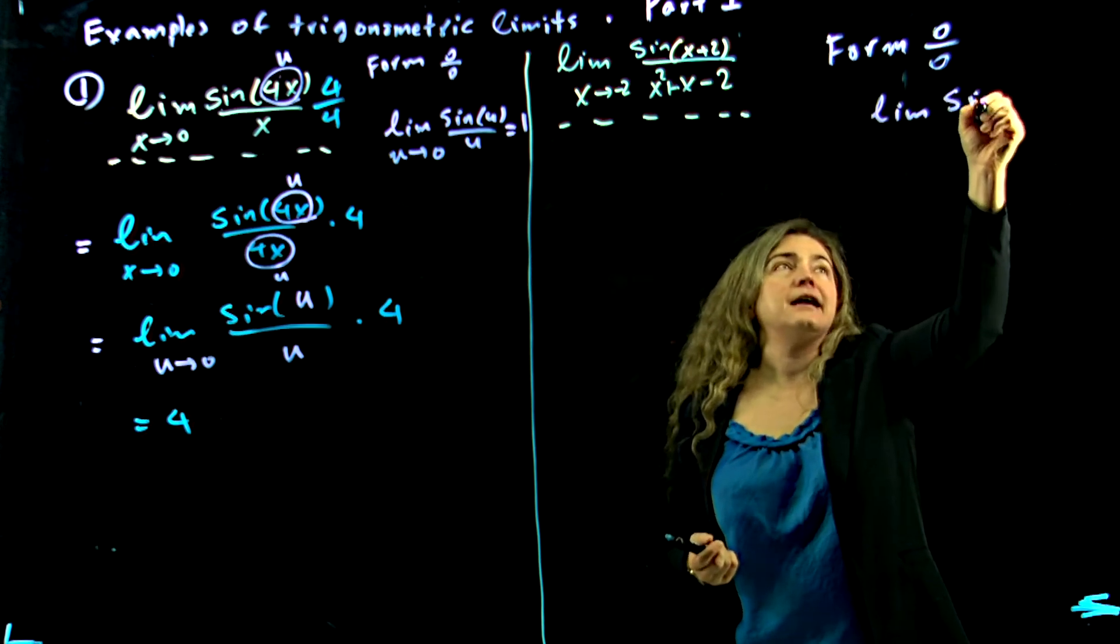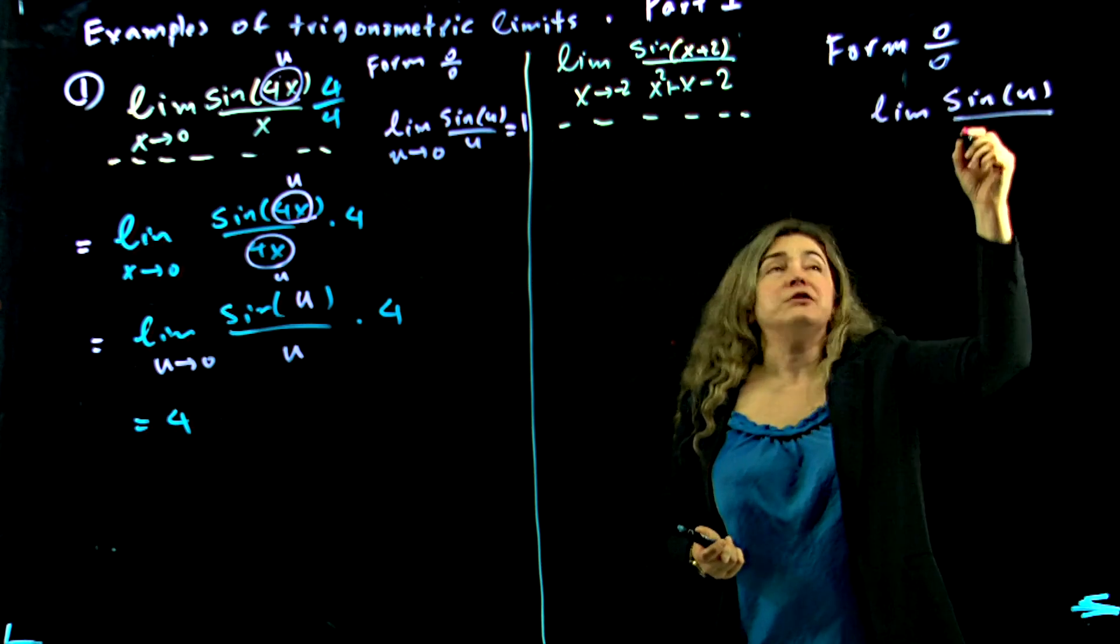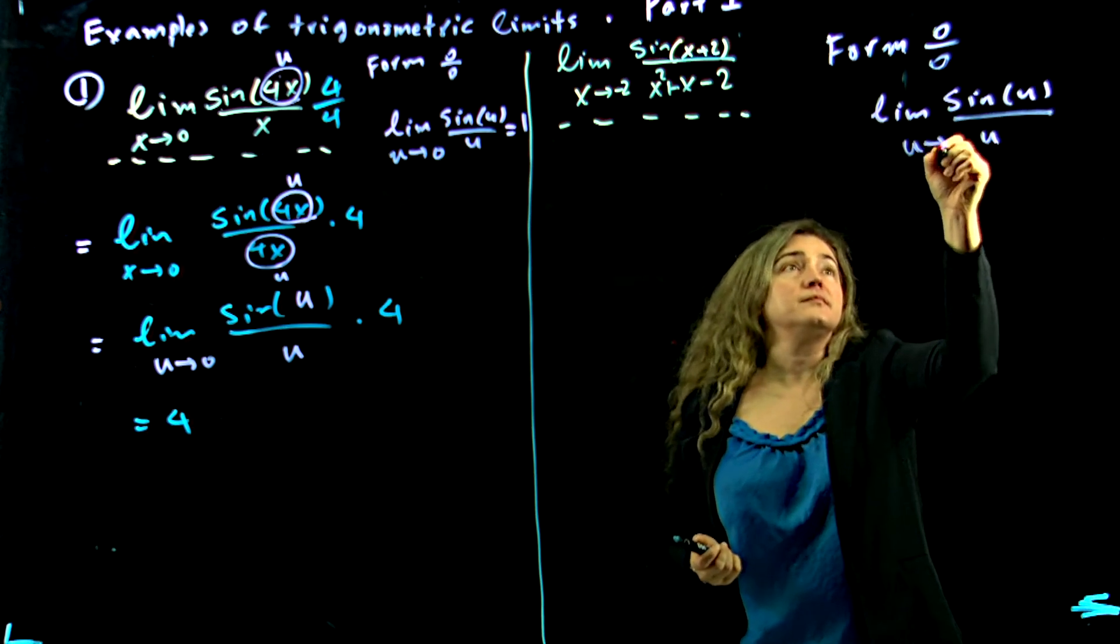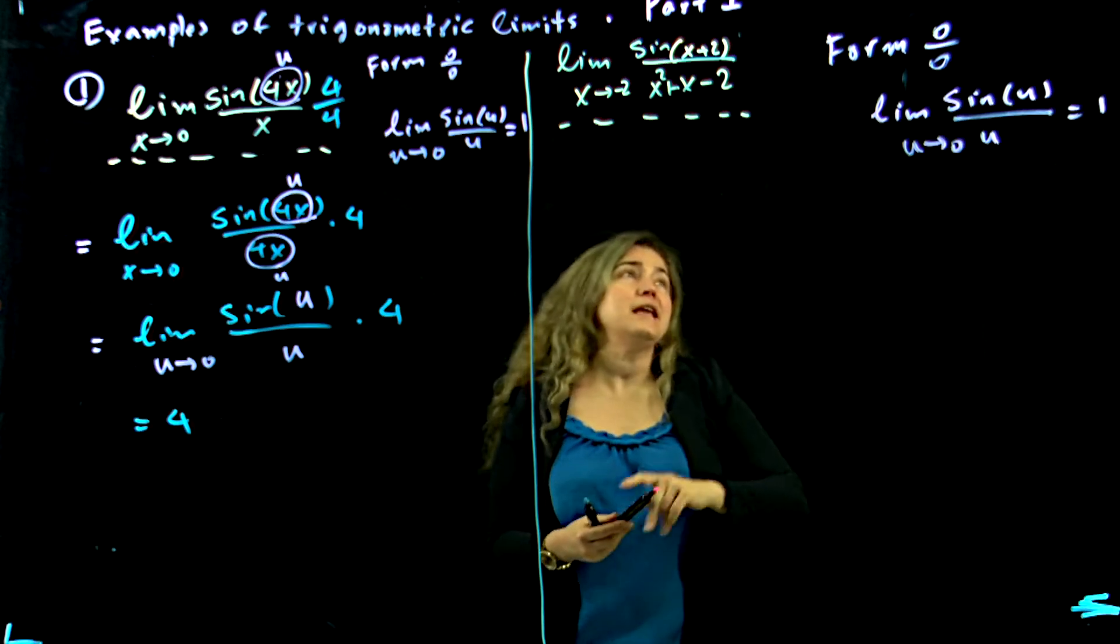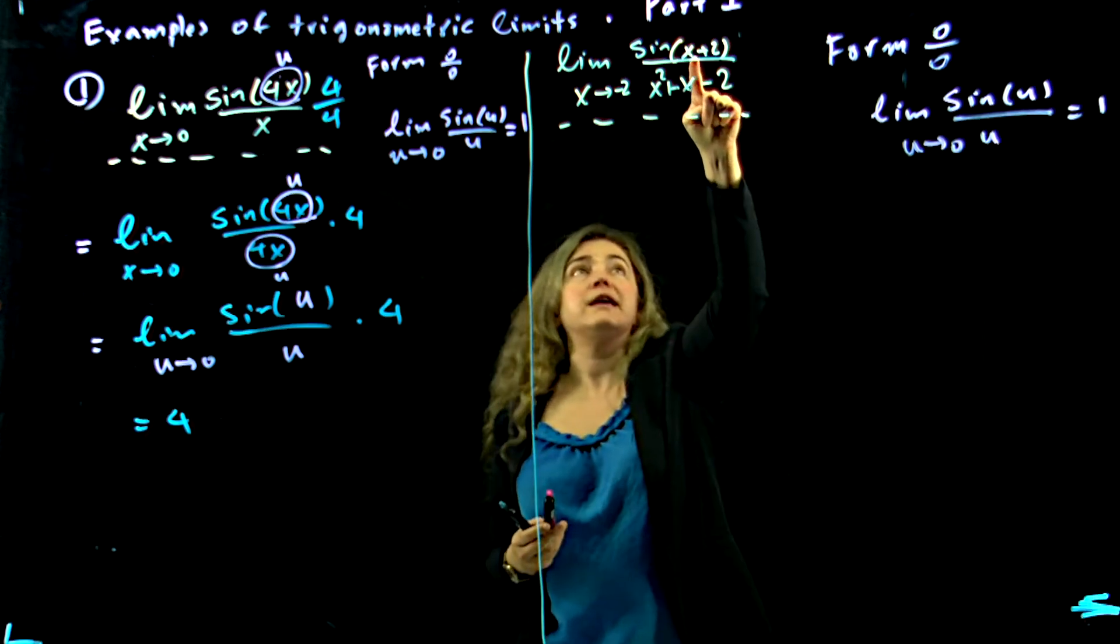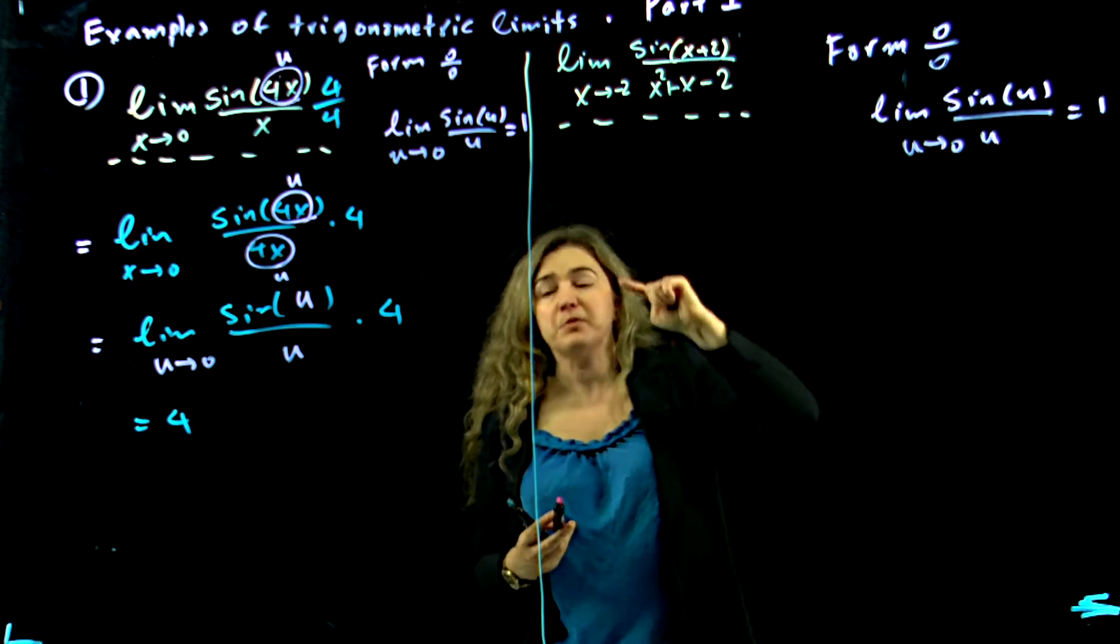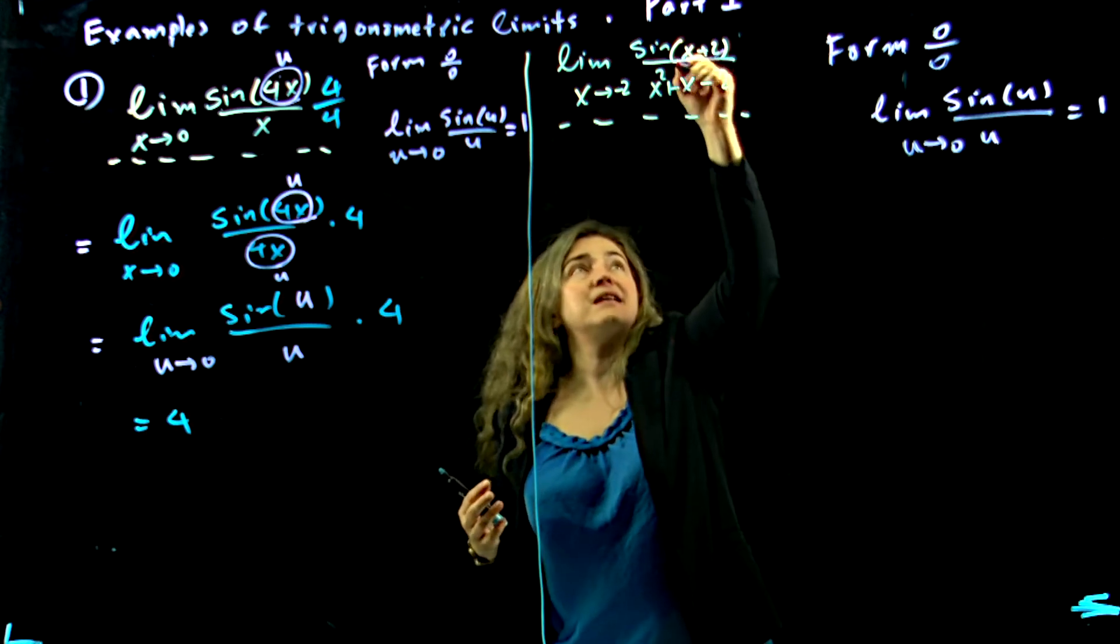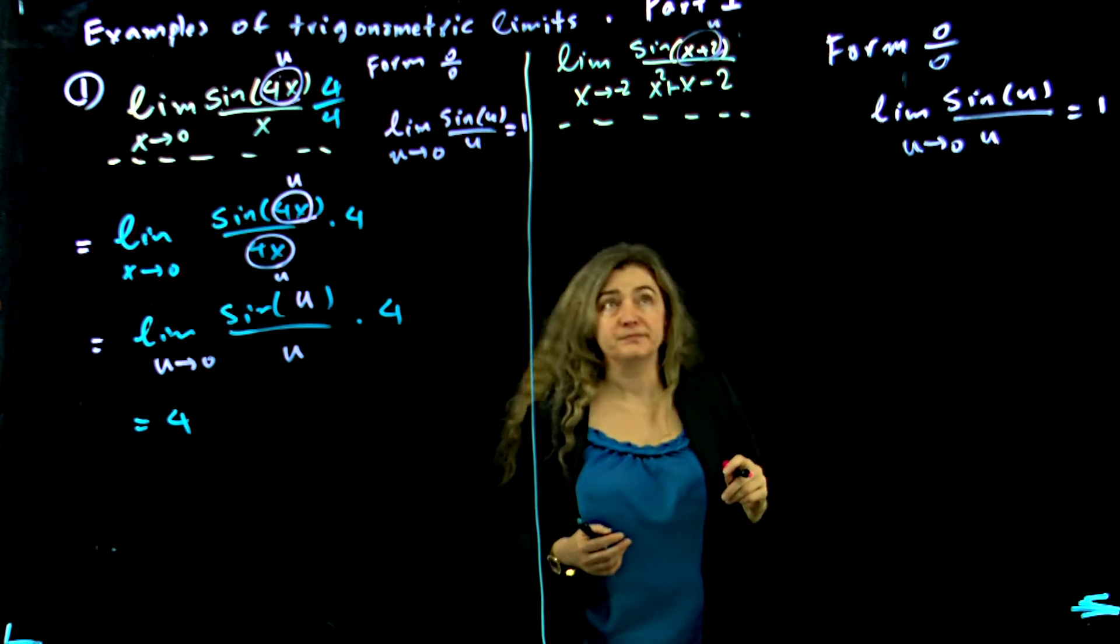So I'm going to put this again down here, and I'm looking at the sine of u. Okay, here I have sine of x plus 2. So it makes sense that this would be u, right?